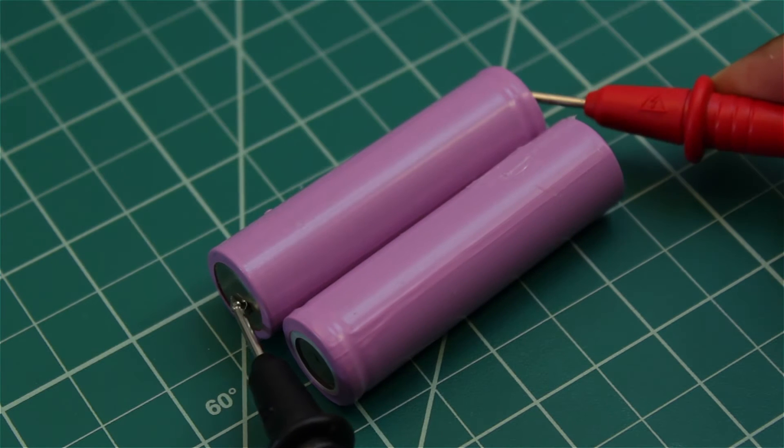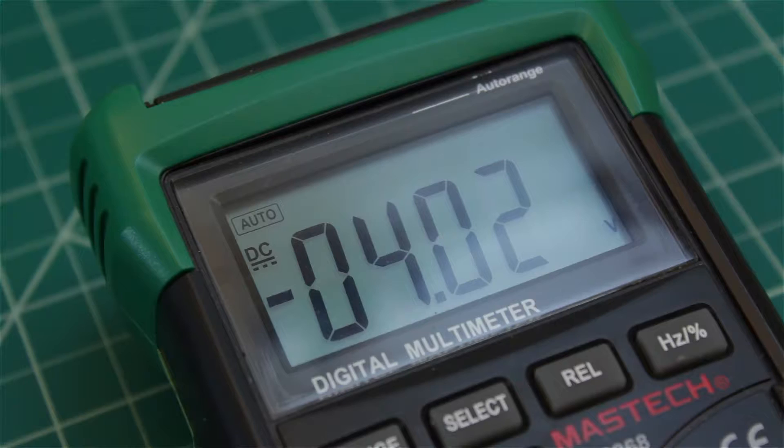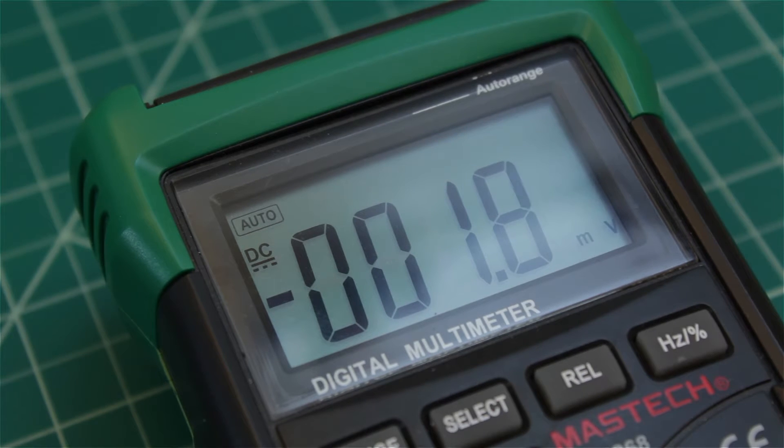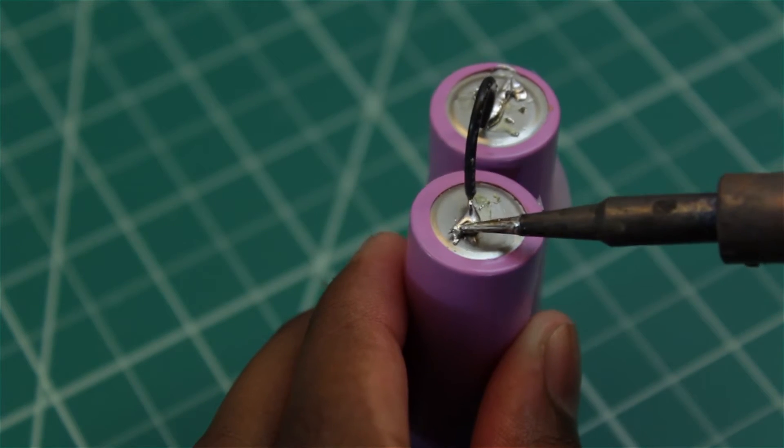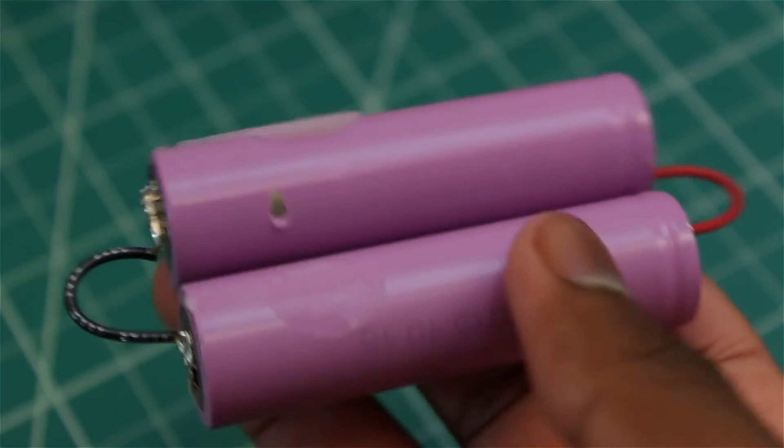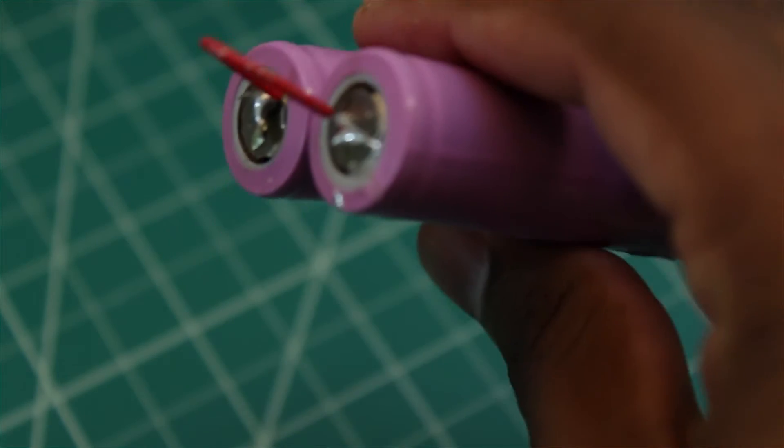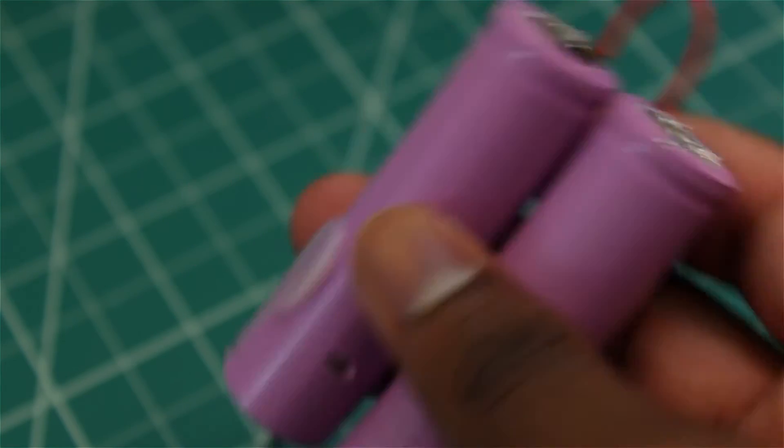Make sure your lithium-ion batteries came together and are at the same voltage level because if not, then you cannot use them together. If they are, then you can use nickel strip to connect the batteries together or you can solder them together with wire like I'm doing, which is actually not recommended. Solder them in parallel so we get double the milliamp hours.